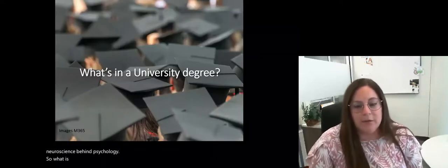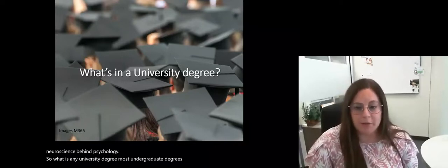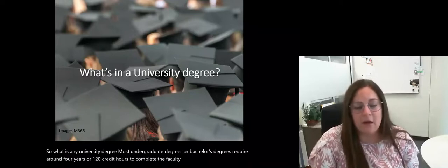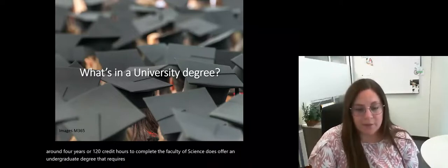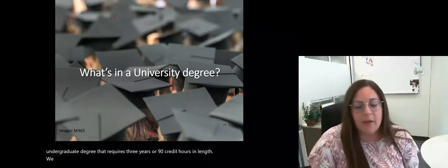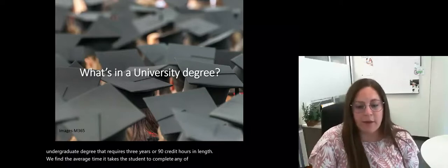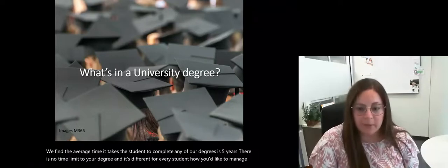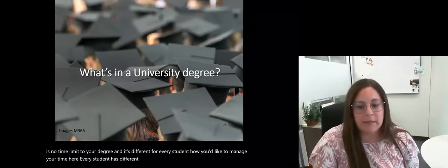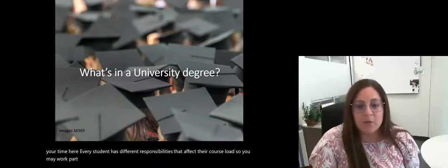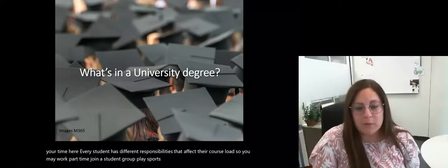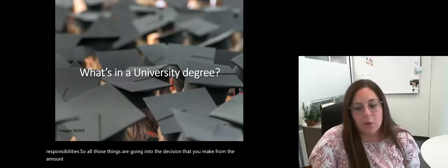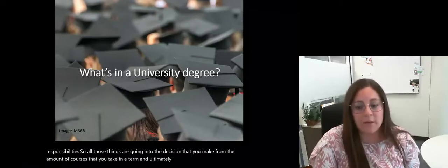So what is any university degree? Well, most undergraduate degrees or bachelor's degrees require around four years or 120 credit hours to complete. The Faculty of Science does offer an undergraduate degree that requires three years or 90 credit hours. We find the average time it takes a student to complete any of our degrees is five years. There is no time limit to your degree and it's different for every student. Every student has different responsibilities that affect their course load—you may work part-time, join a student group, play sports, have financial or family responsibilities.